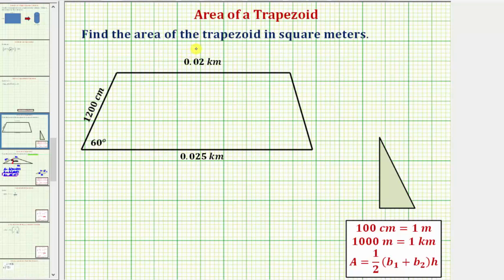We want to find the area of the trapezoid in square meters. The first thing we might notice is that the dimensions are not in meters — one length is in centimeters, and two lengths are in kilometers. Let's begin by converting all the units to meters.